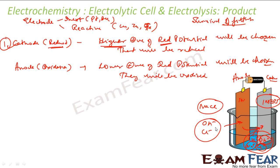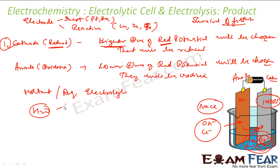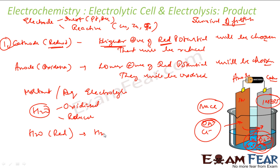Before going deeper, we generally have molten or aqueous electrolytes. Where we have aqueous electrolytes, water is also present and can be either oxidized or reduced — not always, but sometimes. Let me write the reactions for water reduction and oxidation with their voltage values, which is very important to remember.